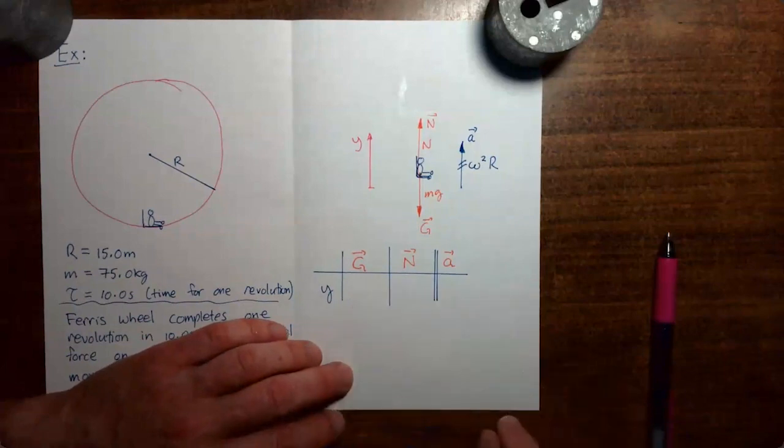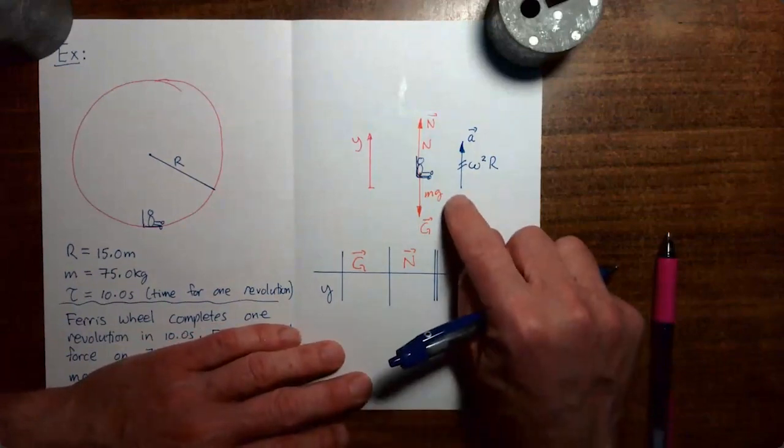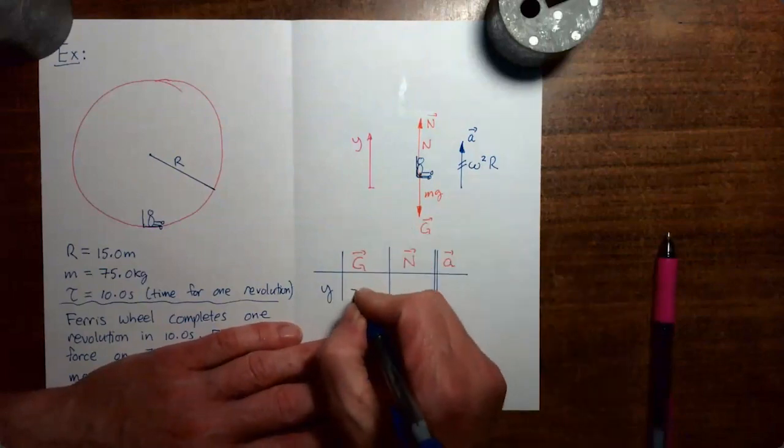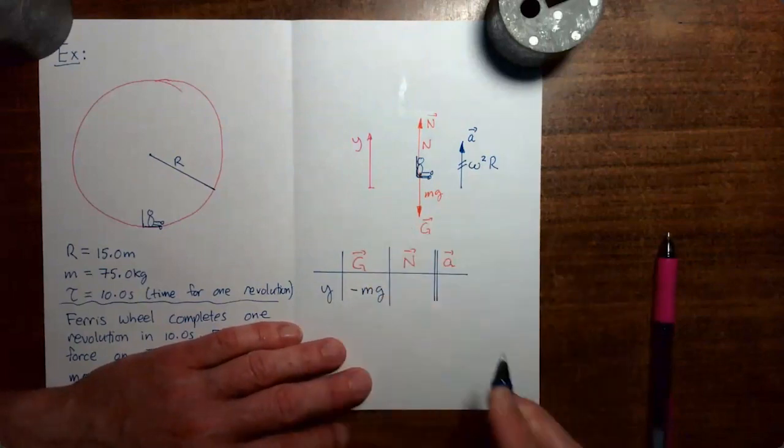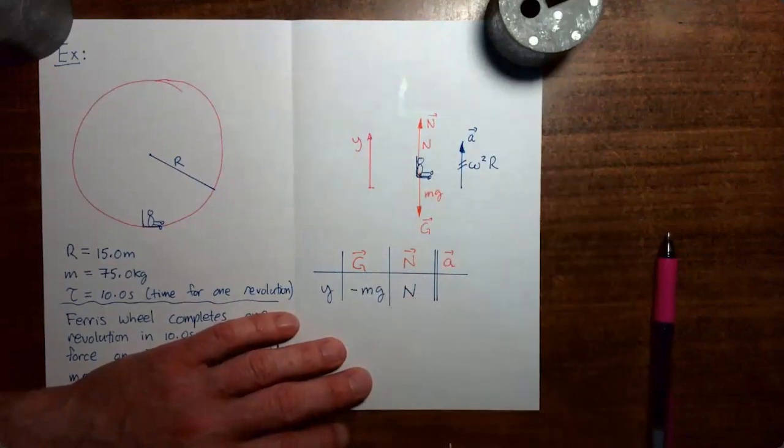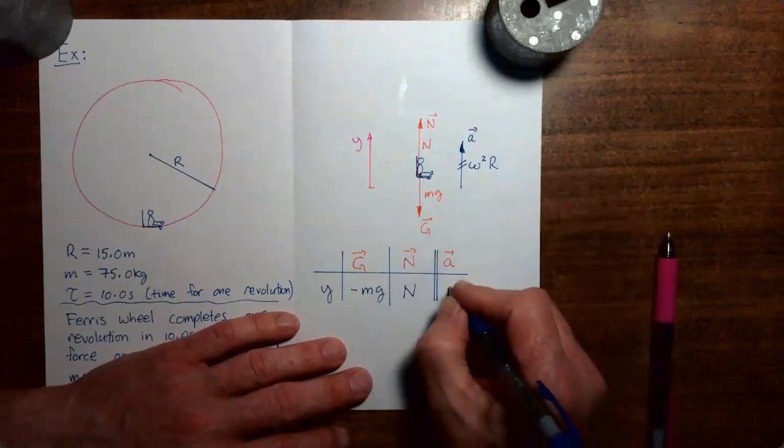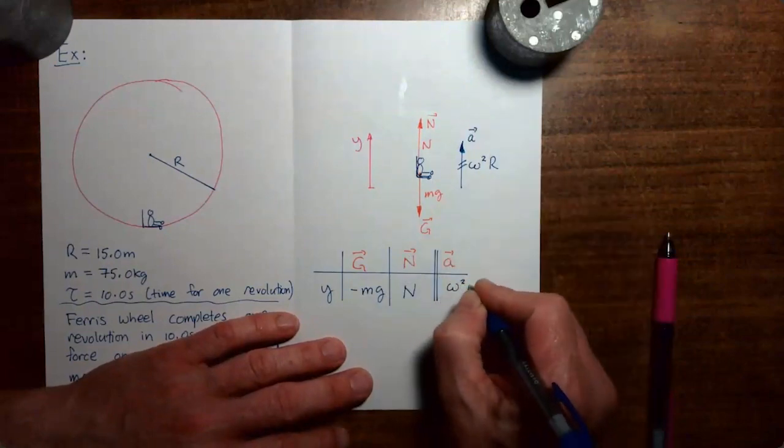And now I'm going to fill this in with the y components of each of the vectors. So gravity points in the minus y direction, so the y component is minus mg. Normal force points in the plus y direction, so the y component is n. And the acceleration points in the plus y direction, so the y component is plus omega squared r.